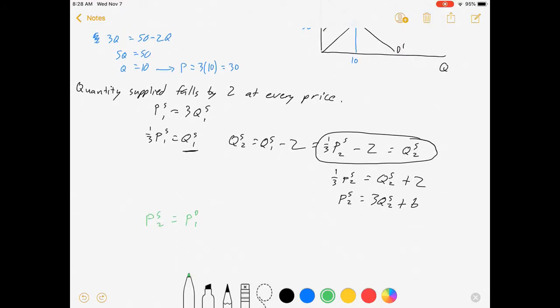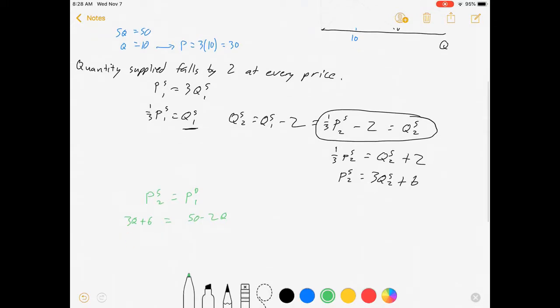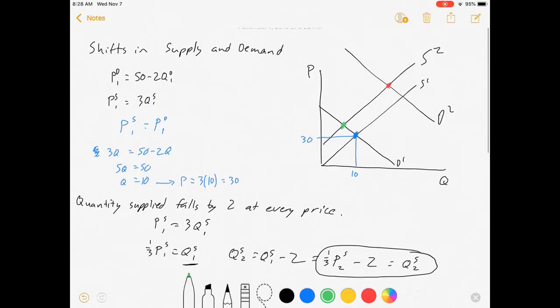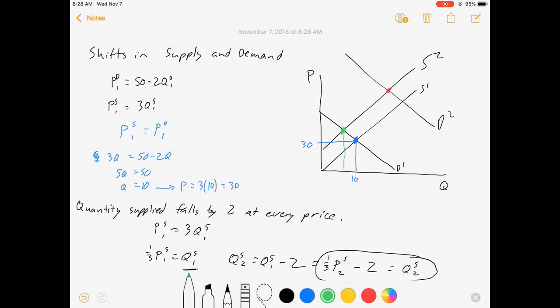So what's that going to look like? Our first demand curve was 50 minus 2q. Our new supply curve is 3q plus 6. That's 5q equals 44. Q equals 8.8. Awesome. There's our next step.